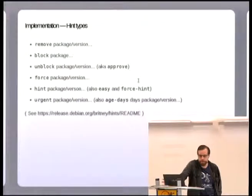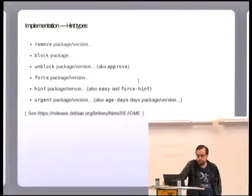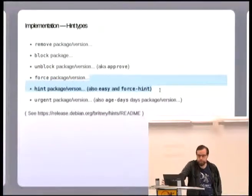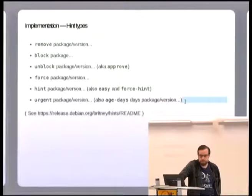Basically they're just a bunch of one-line commands that tell Brittany that it should try and remove a package, it should block or freeze a package, that a particular version of a package is worth bypassing the freeze, that a particular version of a package should go in in spite of new bugs or broken compiles or whatever else. And it also has hints for the complicated transitions where one package breaks another so they all have to go in at once. And the other one is just overriding the urgency, so instead of waiting five days or 10 days or two days, it can be forced to wait 20 days or zero days.